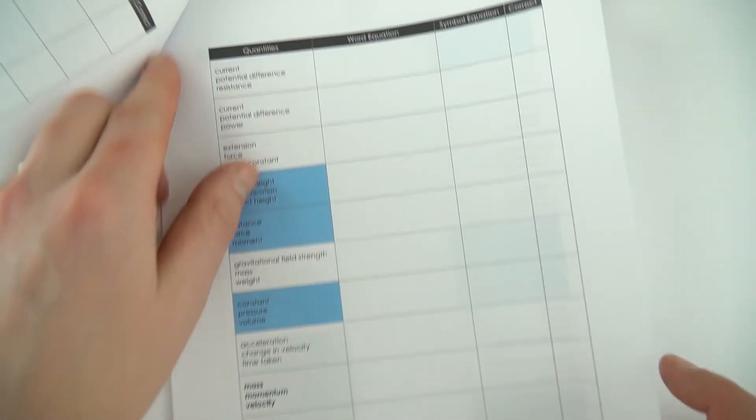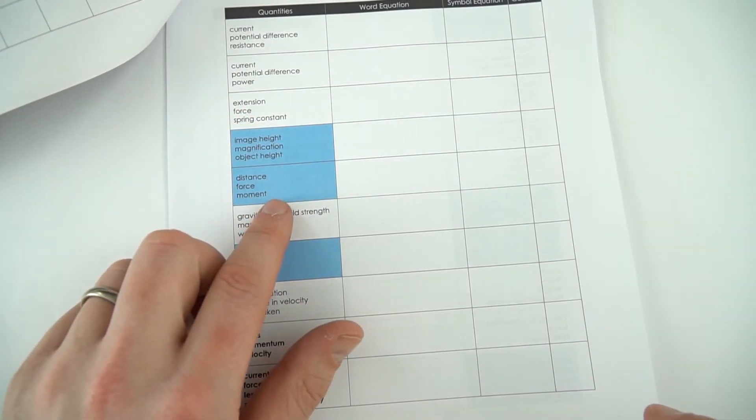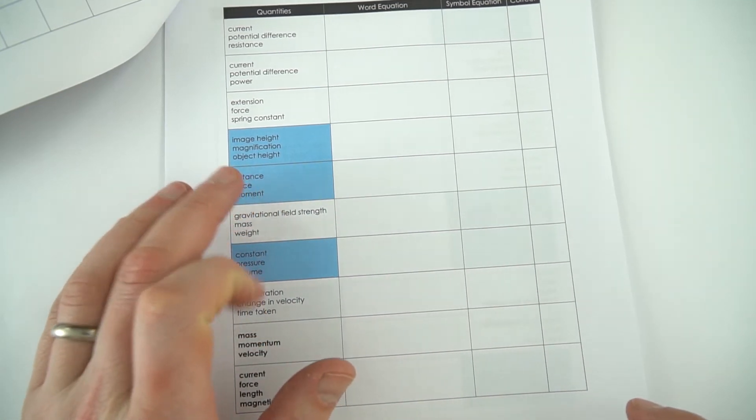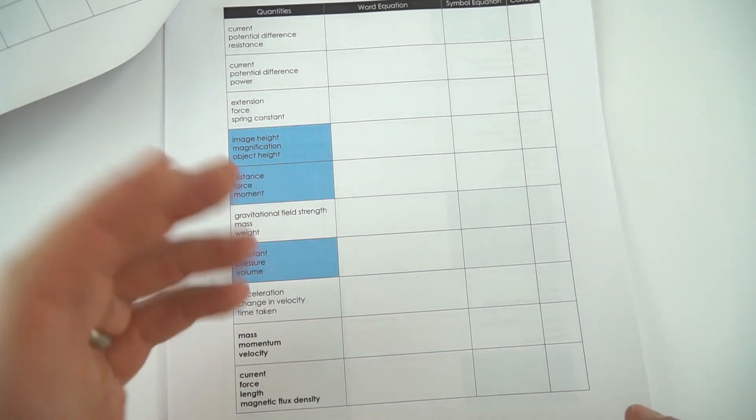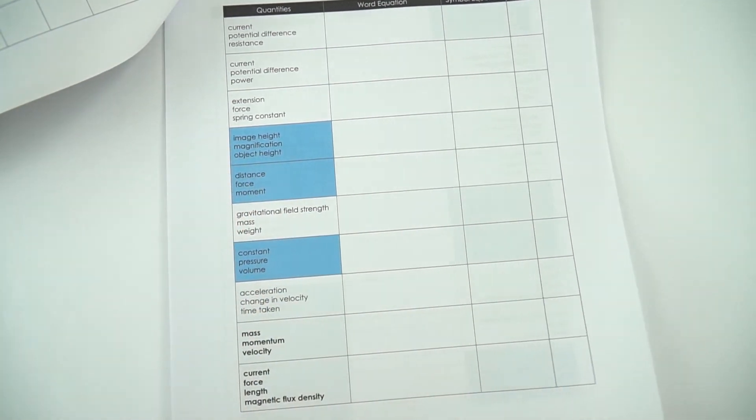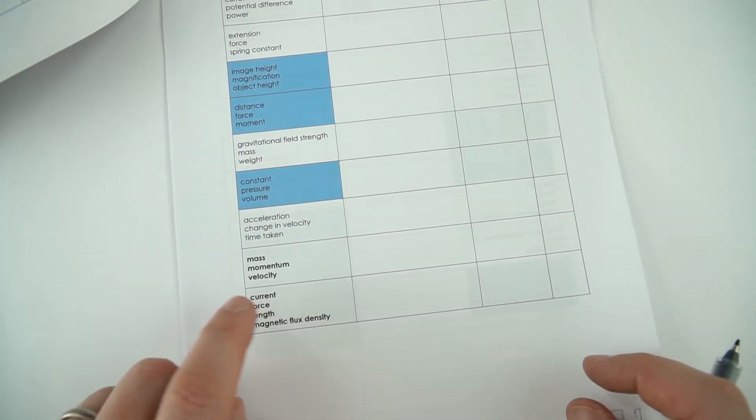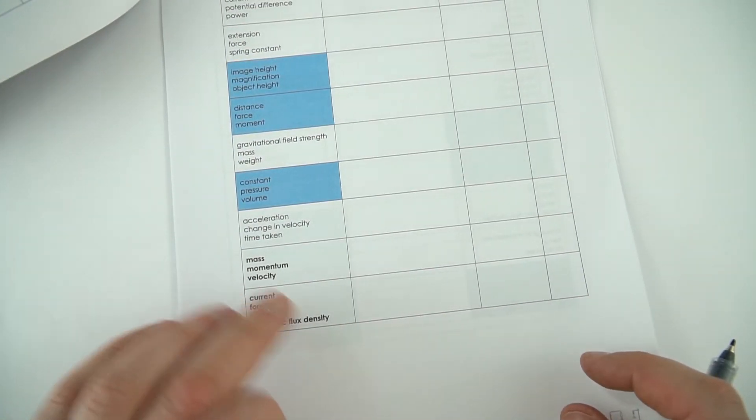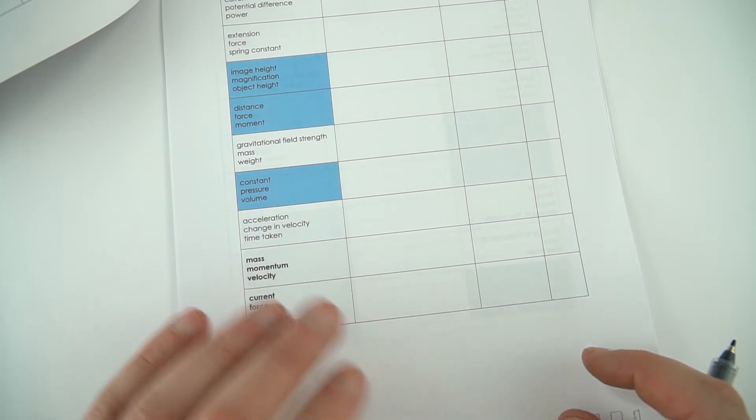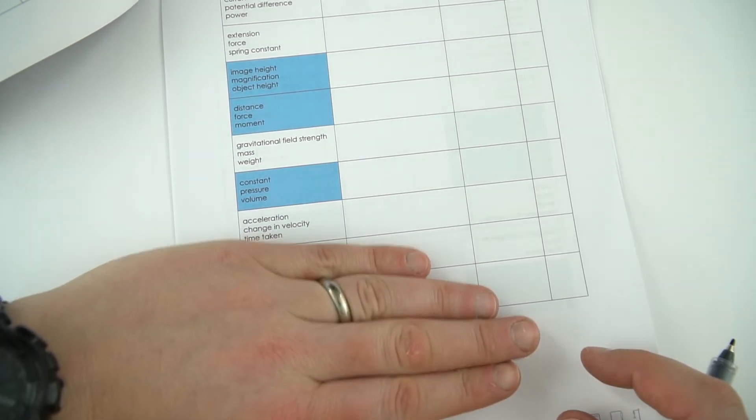On the sheet, I've got a coding system where things highlighted in light blue are for physics only - that might also be called separate sciences or triple science. Also some equations are in bold. If they're in bold, that means they're for the higher tier paper, and if you're doing foundation, you don't need to do these.